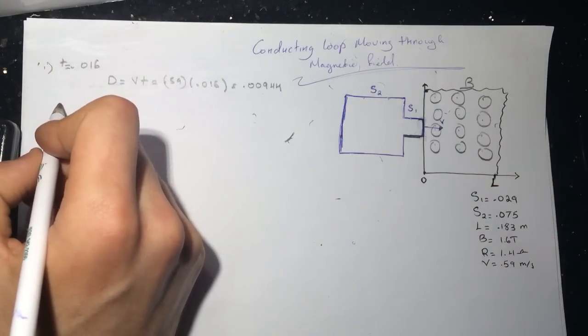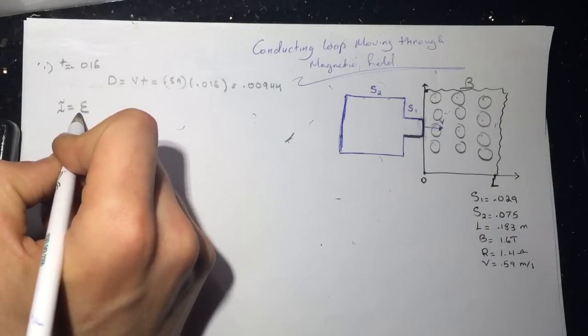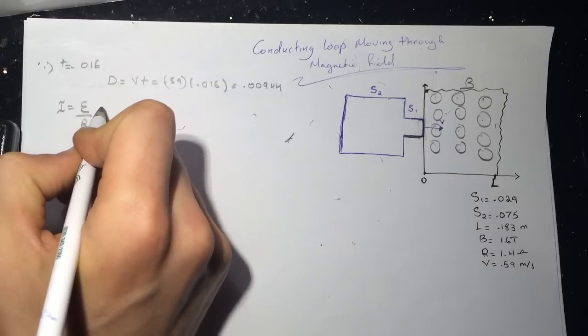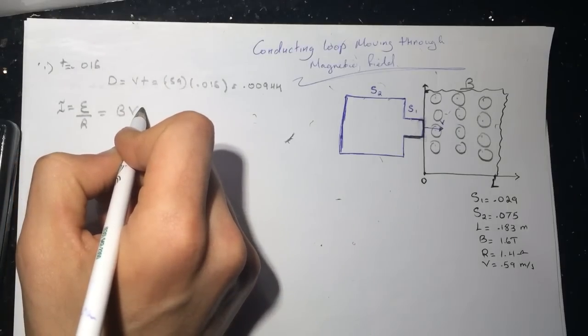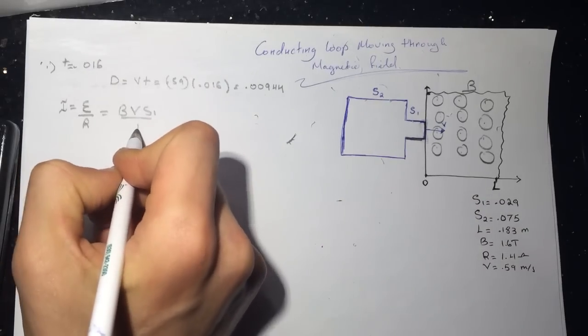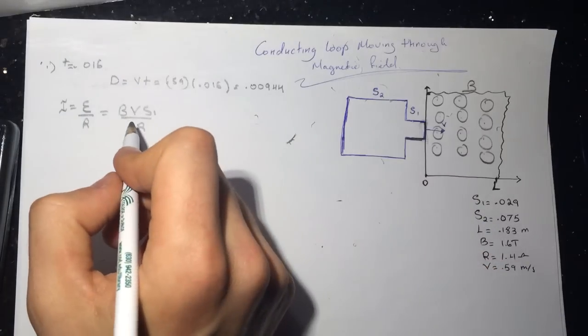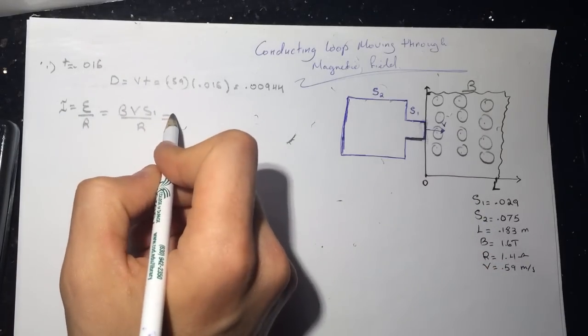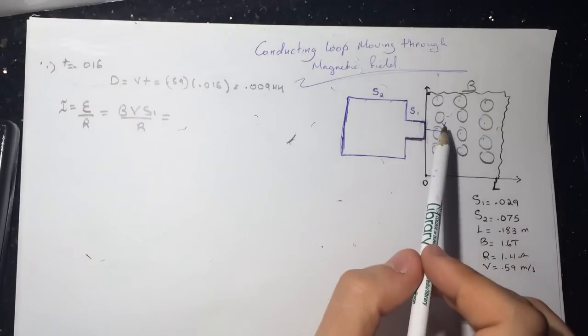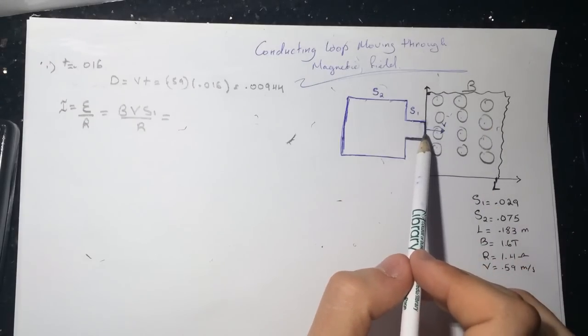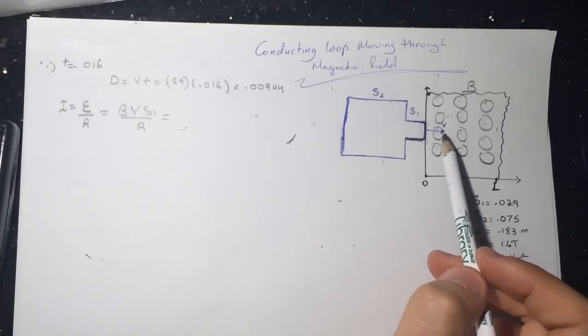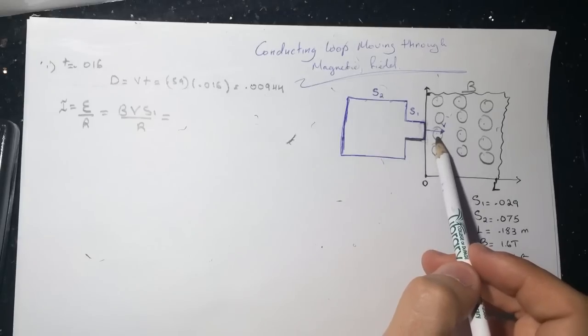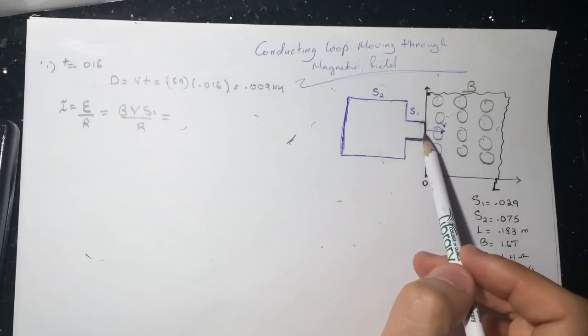That means that only part of this segment of the loop is entering it. So when we do I equal EMF over R, and this is BV times the S1 over R. This will give you the I. And let's see what direction the current will be going. So when this enters the magnetic field, it is gaining dots, and the loop doesn't like that.